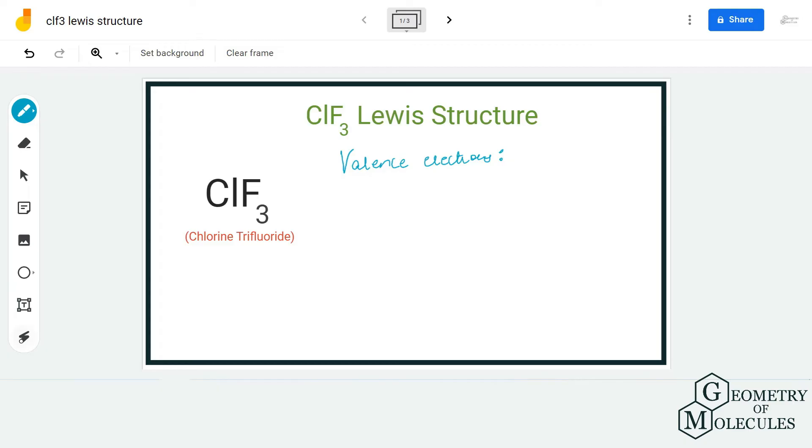Hi guys, welcome back to our channel. In today's video we are going to help you determine the Lewis structure for ClF3, the chemical formula for chlorine trifluoride. To start with its Lewis structure, we first need to know the total number of valence electrons.